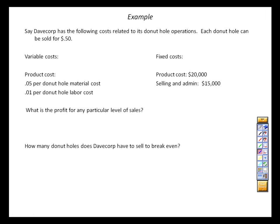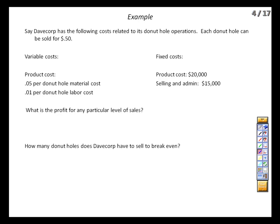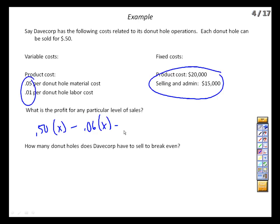Let's say that Davecorp has the following costs associated with its donut hole operations. We can sell each one for $0.50 — some gourmet donut hole action. We've got our fixed costs and variable costs. The profit for any level of sales is: $0.50 times x, minus $0.06 times x, minus fixed costs of $35,000. That gives our profit for any sales level. To find break-even, we set P equal to zero — our contribution margin condenses down to $0.44. Dividing both sides by $0.44, we find that to break even, we need to sell 79,546 donut holes.